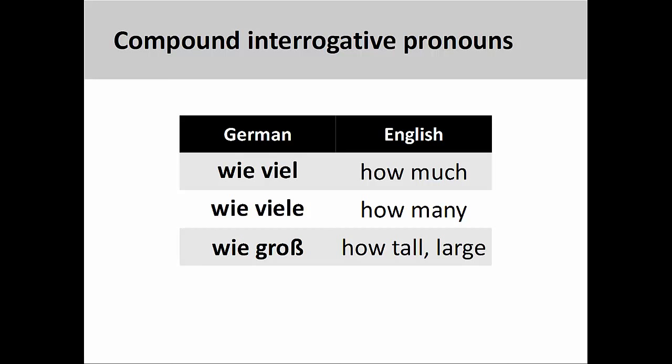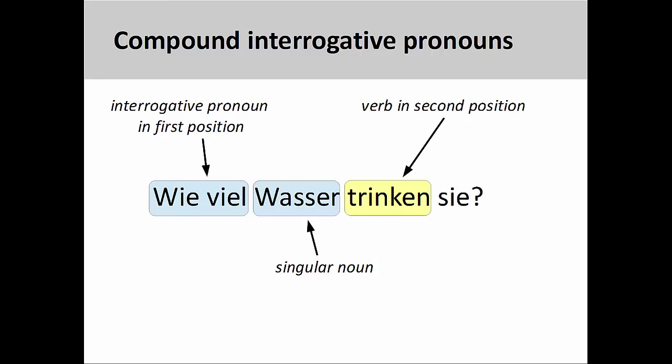Since these pronouns appear directly before a noun, they are sometimes also called interrogative adjectives. The interrogative pronoun 'wie viel' (how much) is usually used in conjunction with a singular noun to ask about the quantity or volume of that noun.